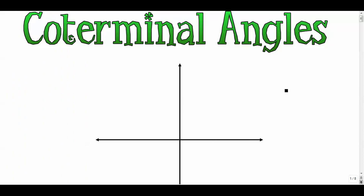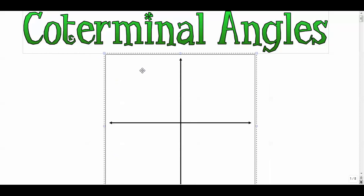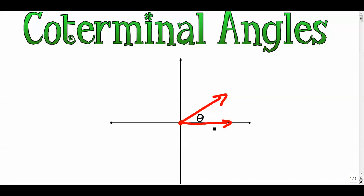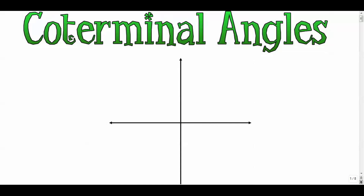Our next video in our trig unit is coterminal angles. The prefix 'co' usually means 'with,' and 'terminal' means where angles stop. From our video on drawing angles in standard position, we put our angles in standard position with our initial ray and our terminal ray. Coterminal means that angles sort of lie on top of each other.